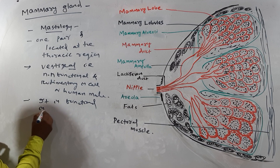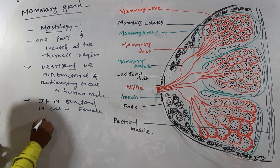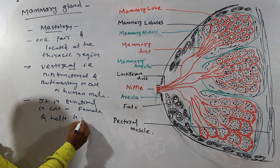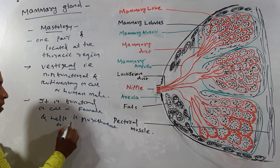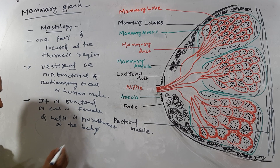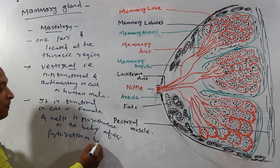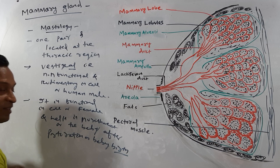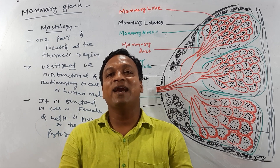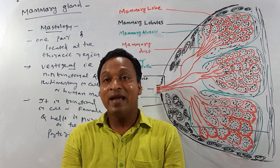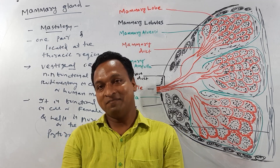The mammary gland is functional in females and helps in nourishment of the baby after parturition — that is, baby birth. When the baby is born, the mammary glands of the female help in nourishment.